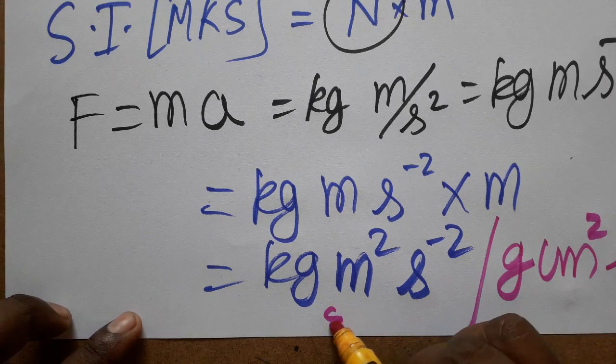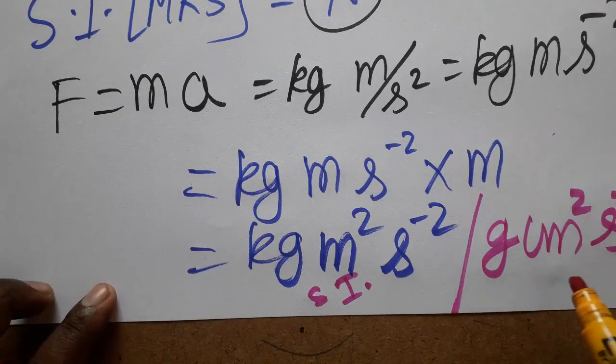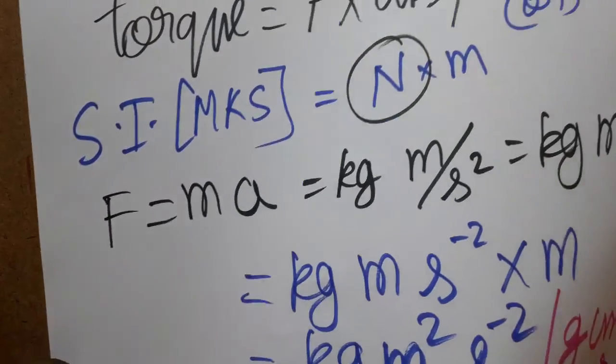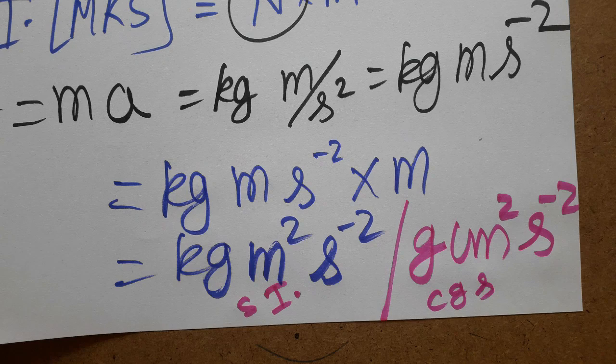This is SI unit which follows the MKS system, and this is the CGS system. So we learned today torque SI unit in both ways: one is SI unit, another one is CGS system. Thank you.